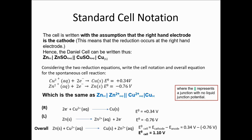We use what is called standard cell notation. You have zinc solid separated by a solid line from zinc sulfate solution (aqueous), and that half cell is separated from the other half cell by two solid lines, indicating the presence of the salt bridge and external connecting wires, and also the absence of liquid junction potential. Then we have copper sulfate solution separated from copper metal by a solid line, indicating the solid-liquid interface between copper sulfate solution and copper metal.